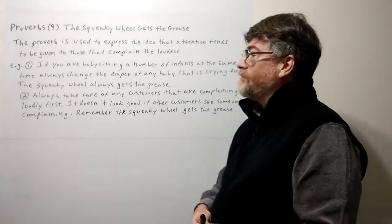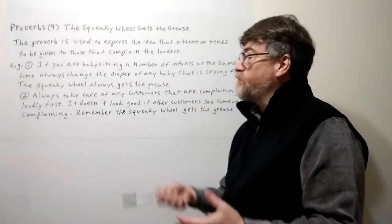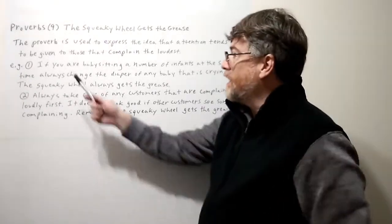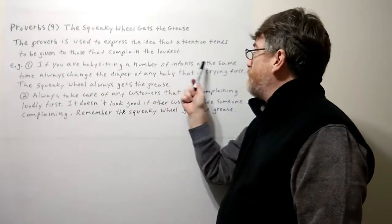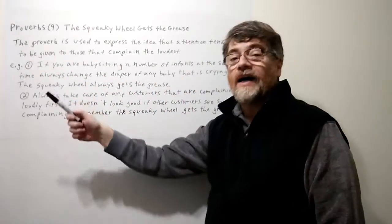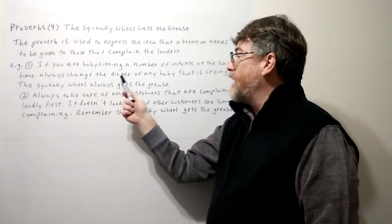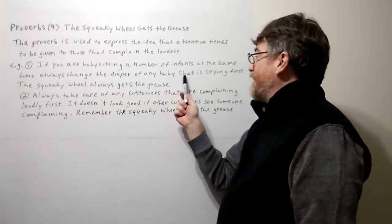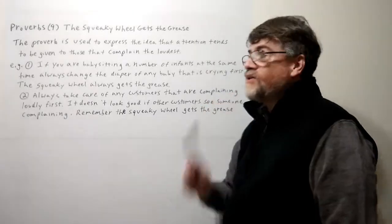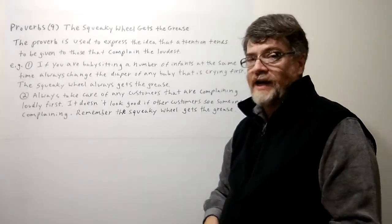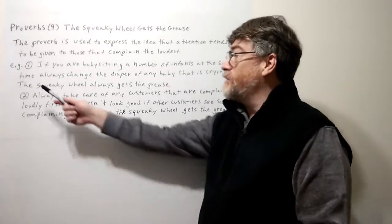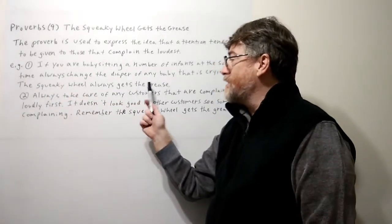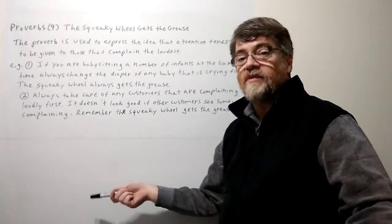So let's look at some examples of how we use it, especially with people. If you are babysitting a number of infants at the same time, always change the diaper of any baby that is crying first. You'd probably do that anyway because that's a really annoying sound. But that's what we say - the squeaky wheel always gets the grease. This is the way we would use it.